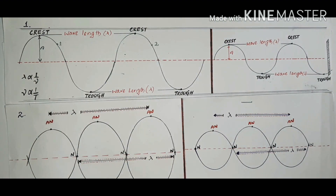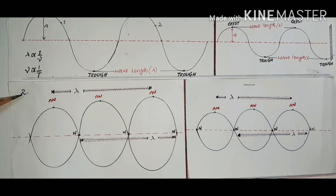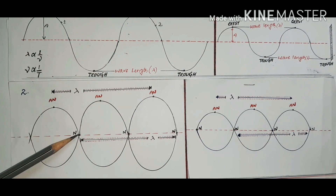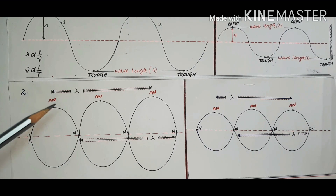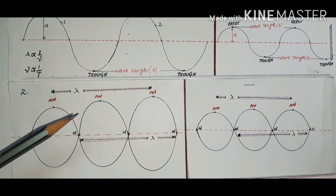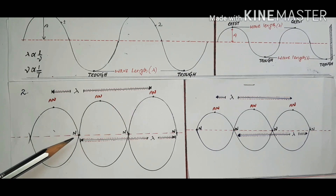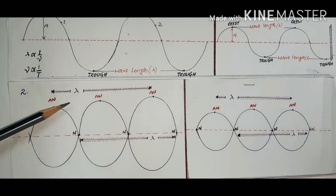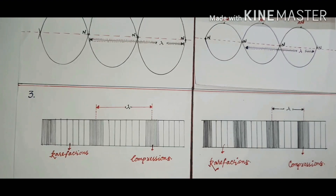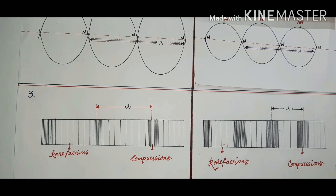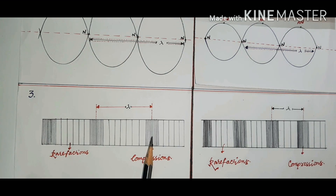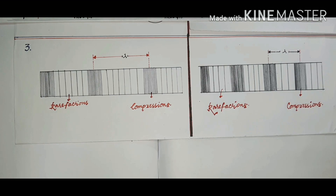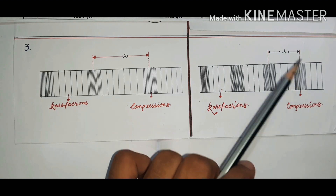For a stationary wave, the wavelength is defined as the distance between two alternate antinodes or two alternate nodes — not two successive ones, but two alternate ones. In this case, the wavelength may be more or less. For a longitudinal wave, the wavelength is defined as the distance between two successive compressions or two successive rarefactions, and again the wavelength may be more or less.